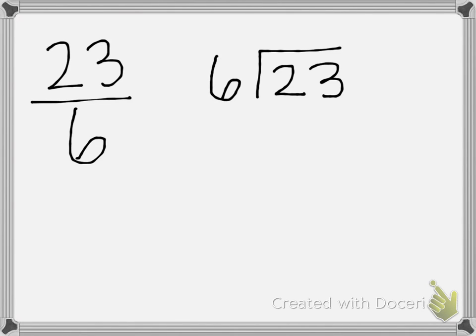Think of your multiples of 6: 6, 12, 18, 24, 30. 24 is too much, so let's go back — 6, 12, 18. We didn't go over with 18, so 6 can go into 23 three times without going over. 3 times 6 is 18. Now we are going to subtract 18 from 23.